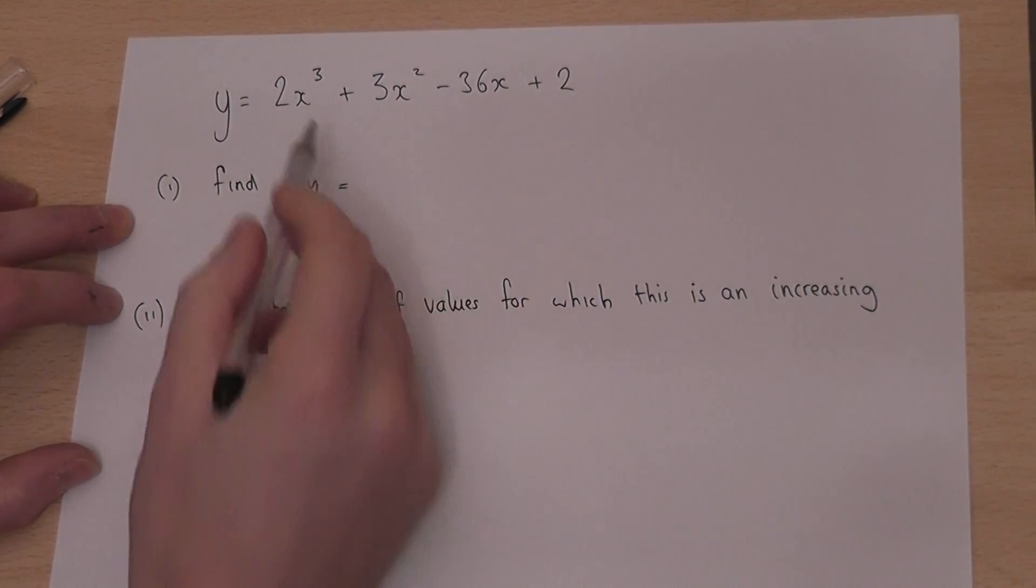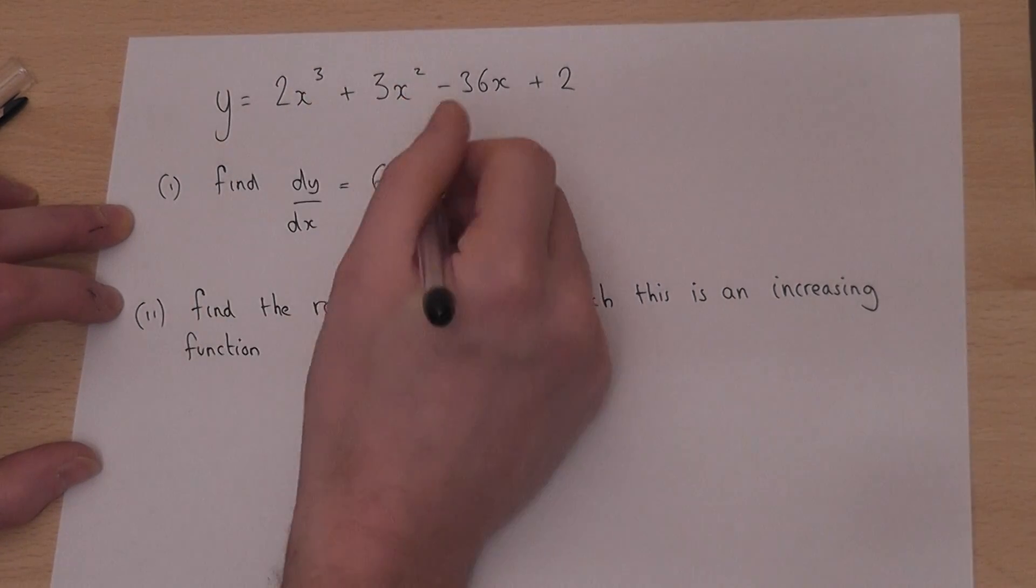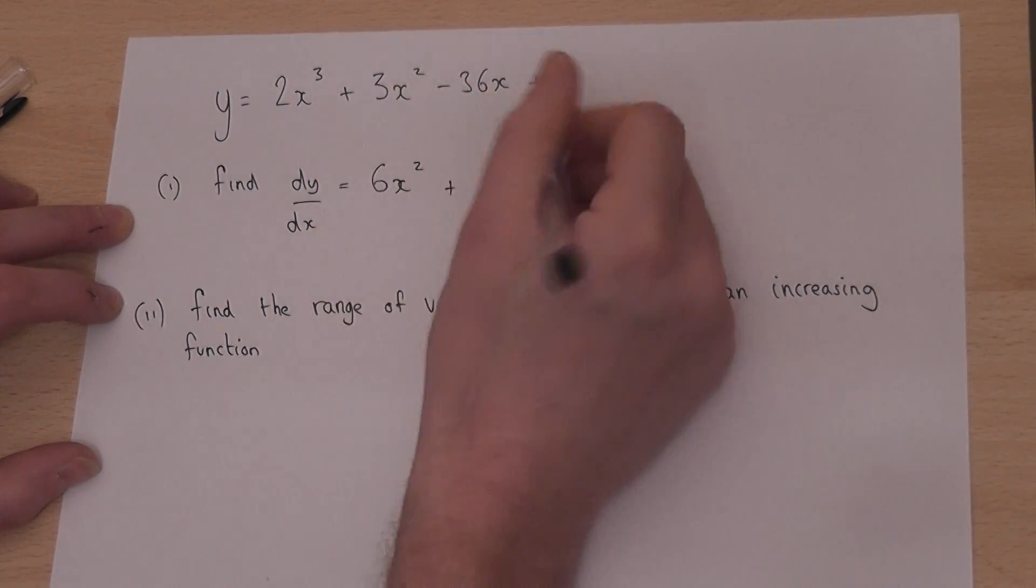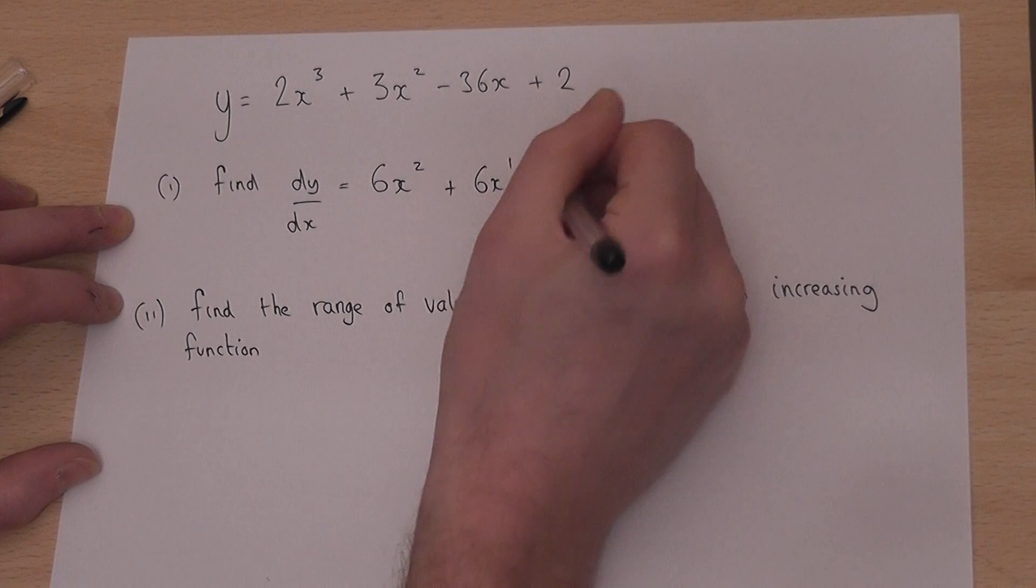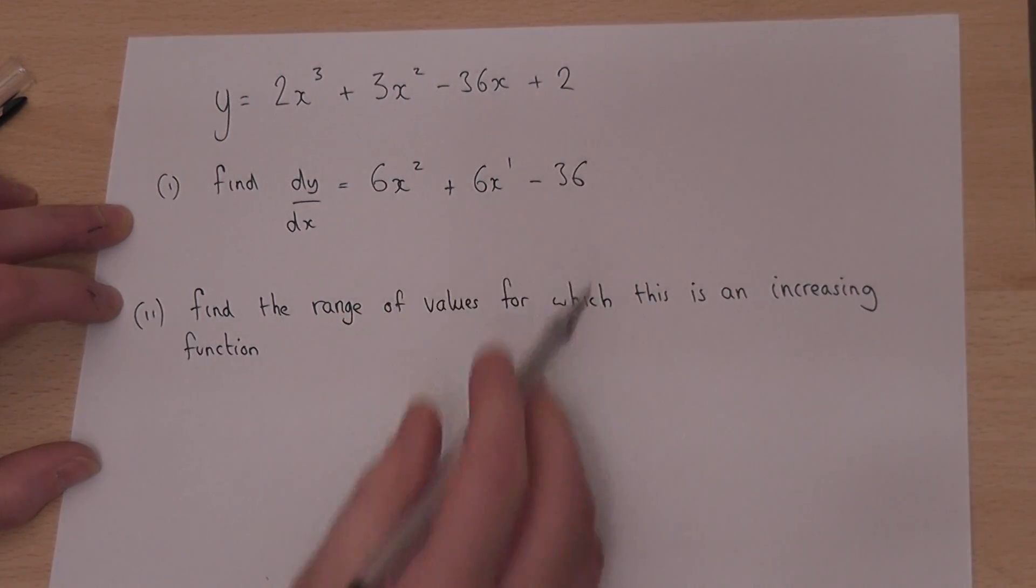Now, to differentiate this, we times by the power, so 2 times 3 is 6, and subtract 1 from the power, so 6x squared times by the power, 6x to the power of 1, take away 36. So dy by dx equals 6x squared plus 6x, take away 36.